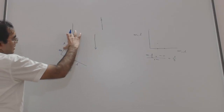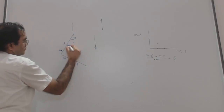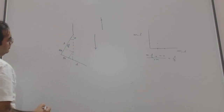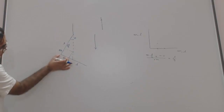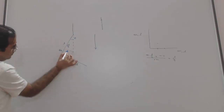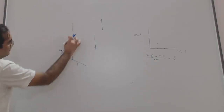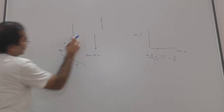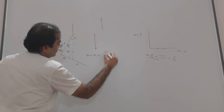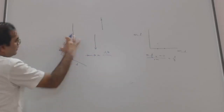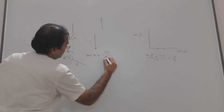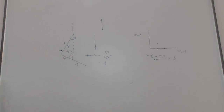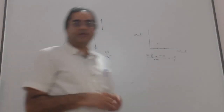So this length will be 3L/4 and this is L/4, and this side is also L/4. Therefore tan(θ) equals L/4 divided by 3L/4, which equals 1/3. So the correct answer is 1/3.